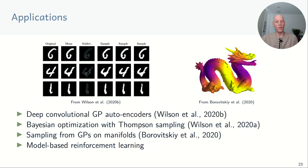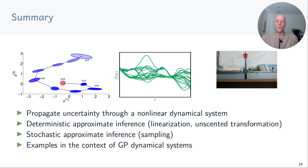To summarize, a key challenge discussed in this video was how to do long-term predictions in non-linear time series models, which requires propagating uncertainty. We looked at deterministic inference including linearization and the unscented transformation, which iteratively approximate the distribution of the next state by a Gaussian. We also looked at stochastic inference, which generates sample trajectories to compute expected utilities. In the last part we discussed these approaches in the context of dynamical systems where the transition function is modeled by a Gaussian process.